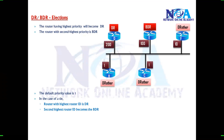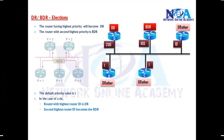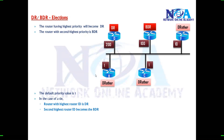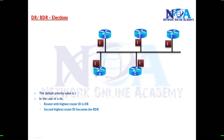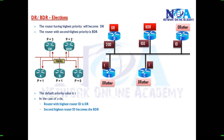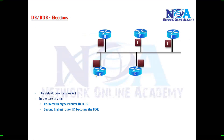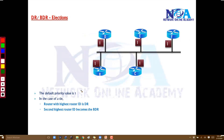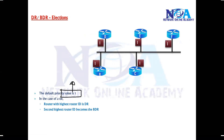Any router which is not a DR or BDR will become the DR Other — technically we call it DR Other. What if there is a tie in the priority value? There is a possibility that all routers may have the same priority value, because if you don't make any changes the default priority value will be 1. In that case, the tiebreaker will be the router IDs.